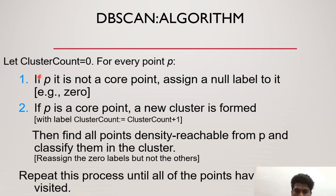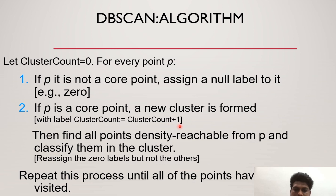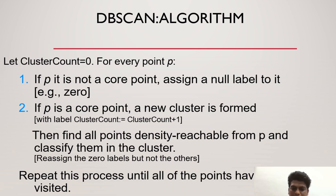In this algorithm, initially we take the cluster count as 0. Then for every point P, we assign a null label. Initially P should be a core point. If P is a core point, a new cluster is formed and the count is increased by 1. Then find all the density reachable points and classify them into the distinct cluster. We repeat the process until all the points have been assigned. This algorithm is mainly based on the neighborhood and the minimum point condition.